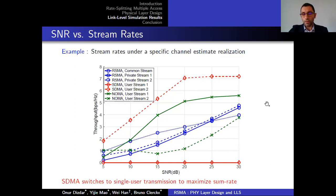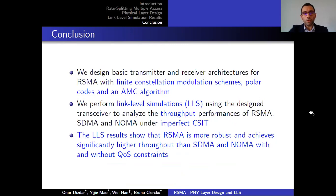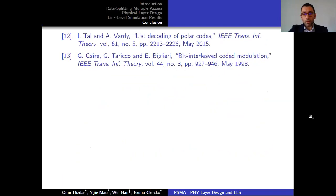In conclusion, we designed transmitter and receiver architectures for RSMA with finite constellation modulation schemes, polar codes, and an AMC algorithm. We performed link-level simulations using the designed transceiver to analyze the throughput performance of RSMA, SDMA, and NOMA under imperfect CSIT. The results show that RSMA is more robust and achieves significantly higher throughput than SDMA and NOMA, with and without quality of service constraints. Thank you for listening to our presentation. We welcome your questions and comments.